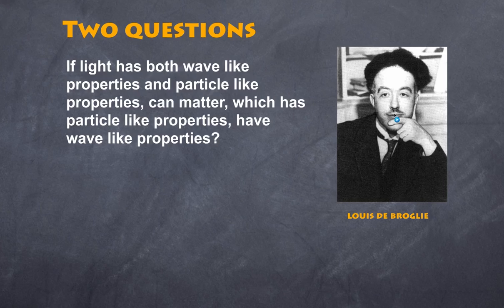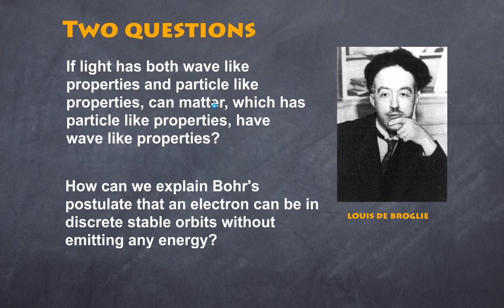And so Louis de Broglie asked the question in reverse: if light can act like particles, can matter act like waves? The second question he asked is: can we explain Bohr's postulate that an electron can be in discrete stable orbits without emitting energy? So let's explore how he actually achieved this.